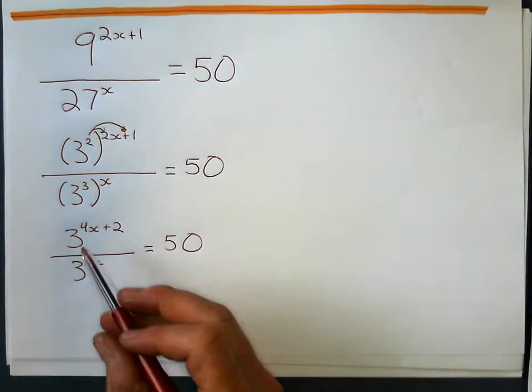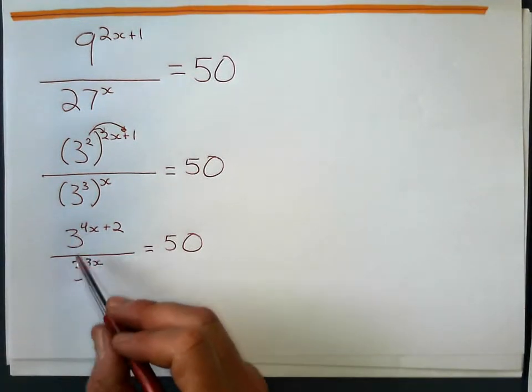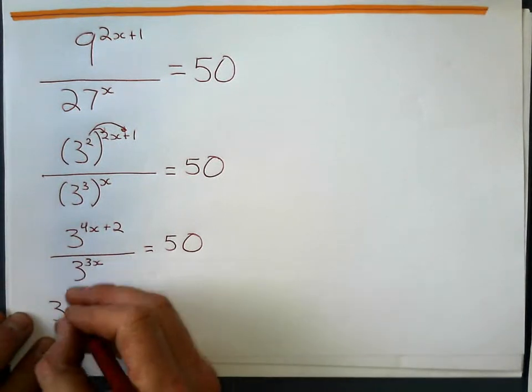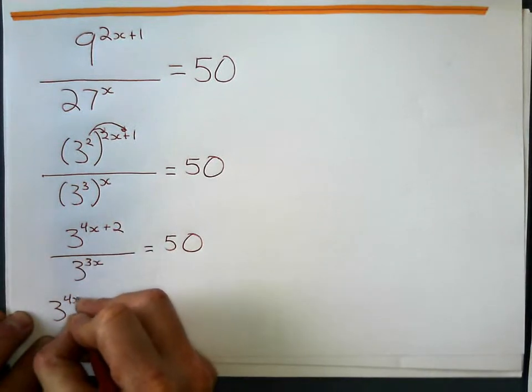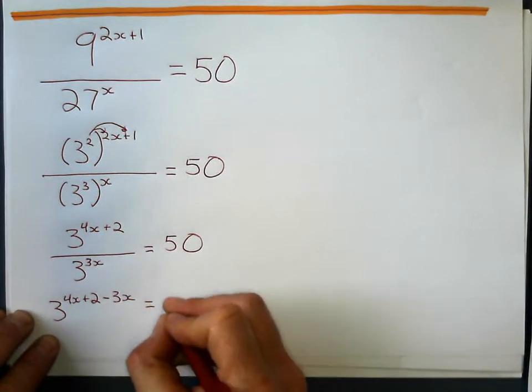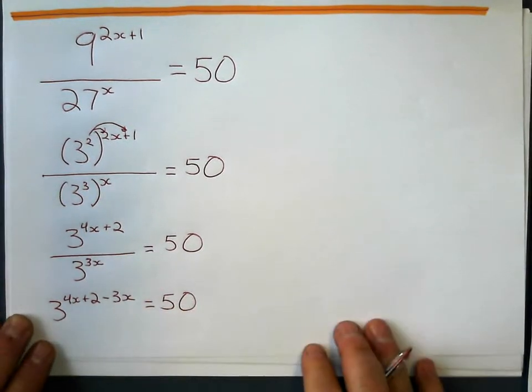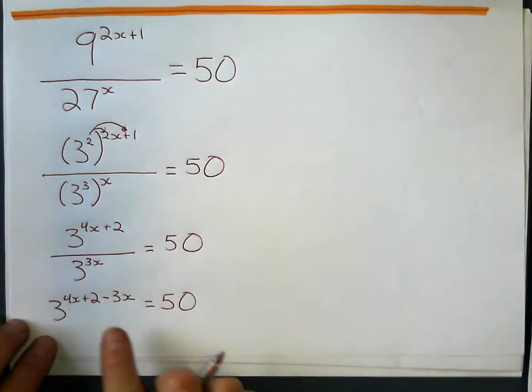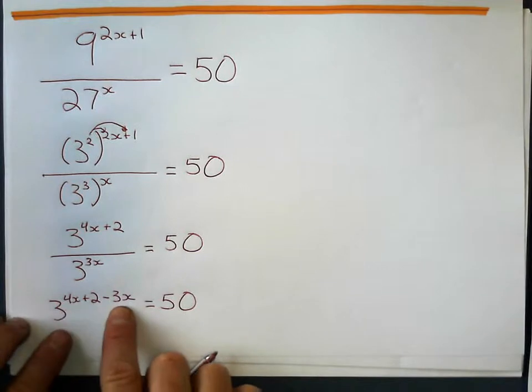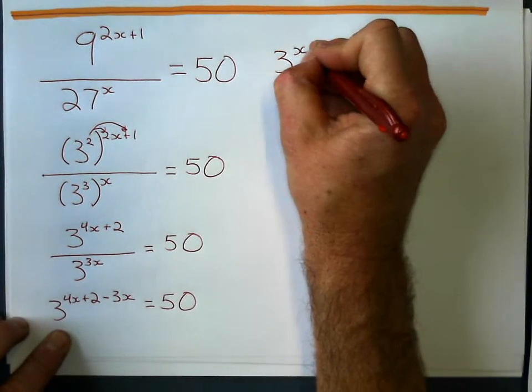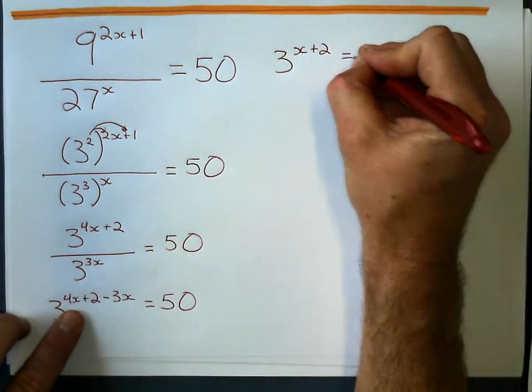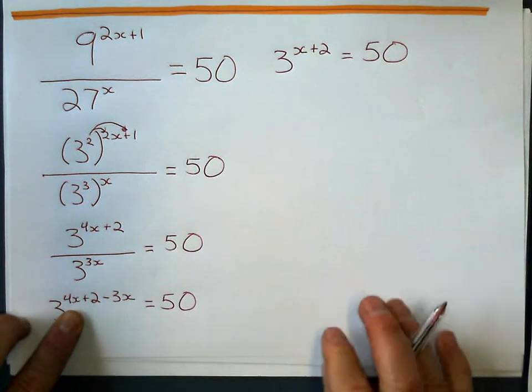Now what do I do with division of powers that have the same base? Division of powers that have the same base, I subtract their exponents. So it's 4x plus 2, 4x plus 2 minus 3x, and that's going to equal 50. Here, now I clean this up, collect like terms. 4x minus 3x is just going to give me 1x or just x. And that's 3 to the power of x plus 2 equals 50.